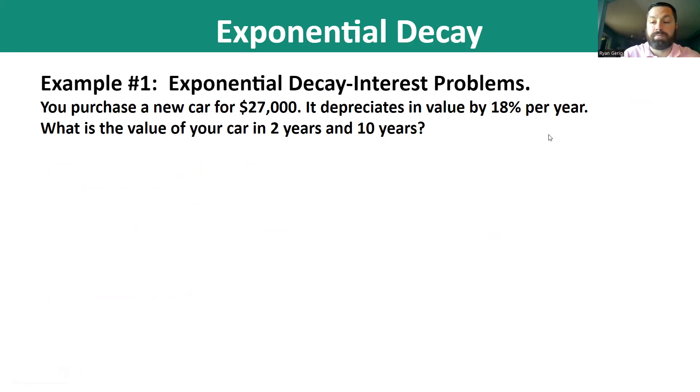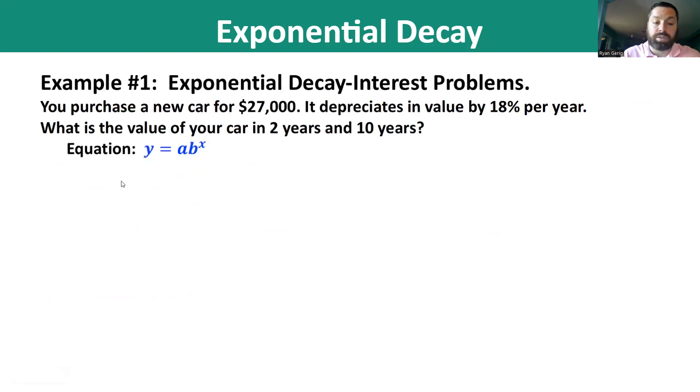So here's an example. You purchase a new car for $27,000. It depreciates in value by 18% per year. It loses value, and it loses 18% of its value per year. What is the value of your car in two years? And how about 10 years? So let's do our equation. We need a, b, and x. a is pretty easy to spot. Again, $27,000.